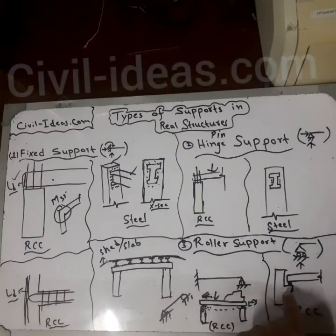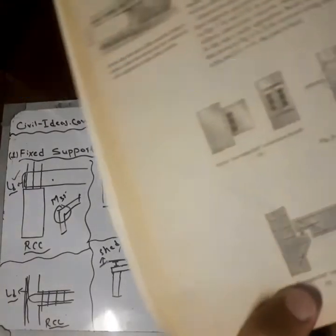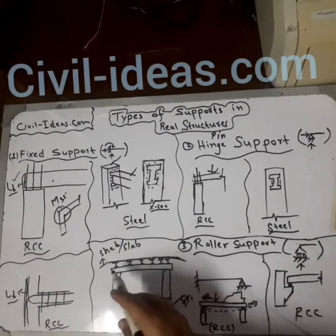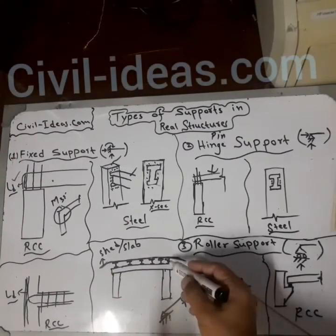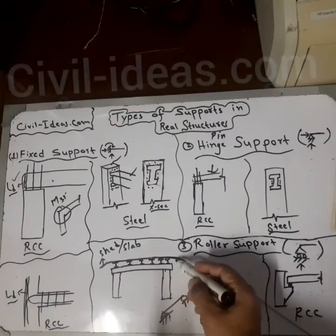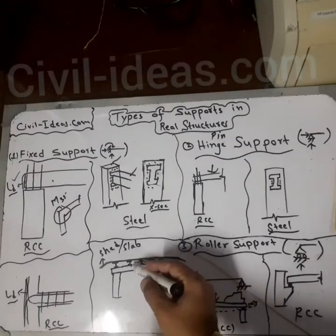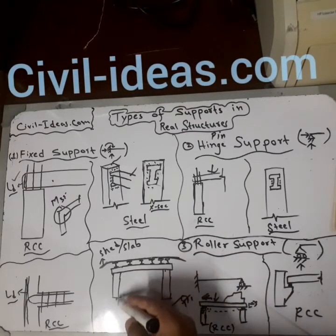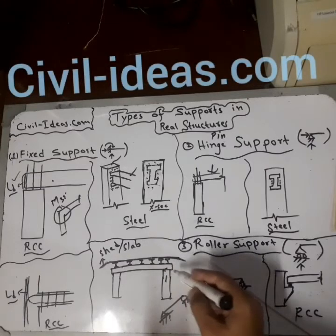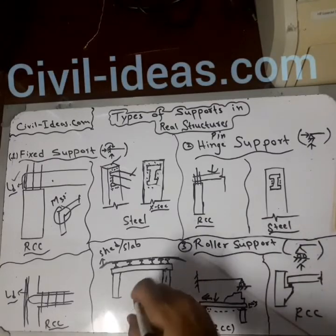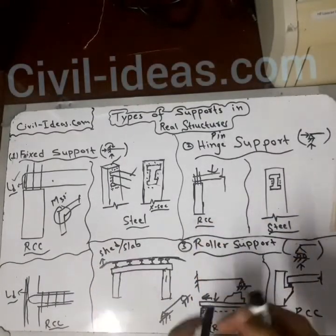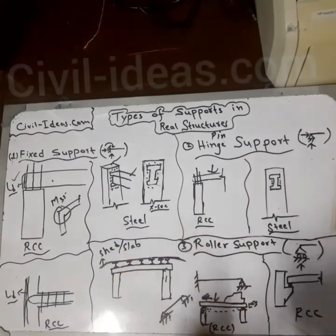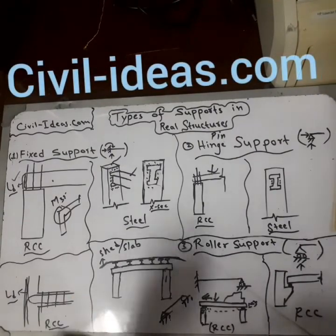Another type of roller support can be seen in industrial buildings. A shed transfers loads to joists, which are I-section beams. The joists transfer loads to a girder, which transfers loads to the column. The girder is simply placed on the column — like a bridge's simply supported girder. This is a roller support. One side is a hinge and the other is a roller, so all horizontal and vertical forces are properly resisted.